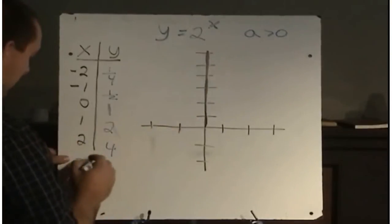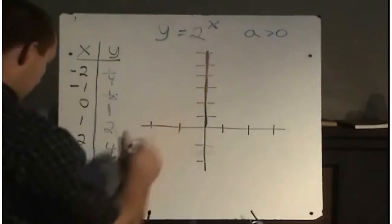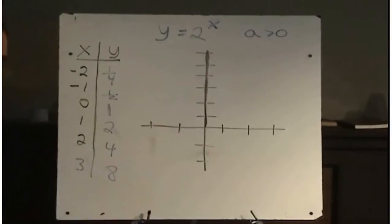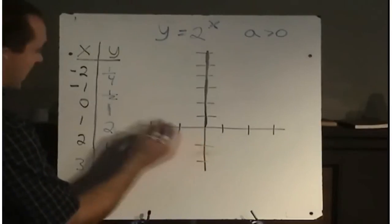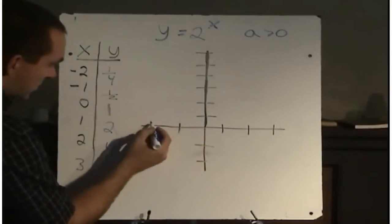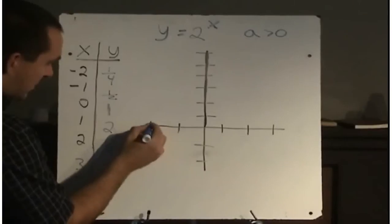We could carry on, we could do an x value of 3. 2 to the power of 3 is 8. So let's plot these points and see what our graph will look like. So when x is minus 2, we said y was a quarter. So that would be somewhere right around here.